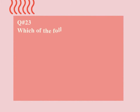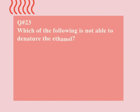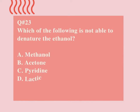Question number 23. Which of the following is not able to denature ethanol? A. Methanol. B. Acetone. C. Pyridine. D. Lactic acid. Correct option is D.